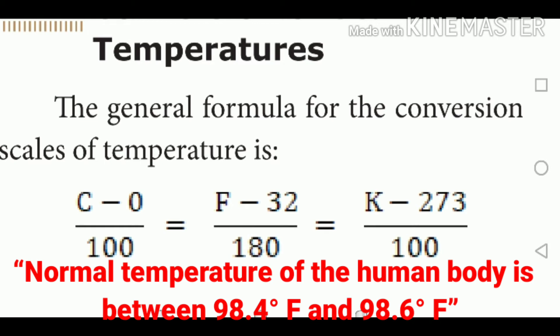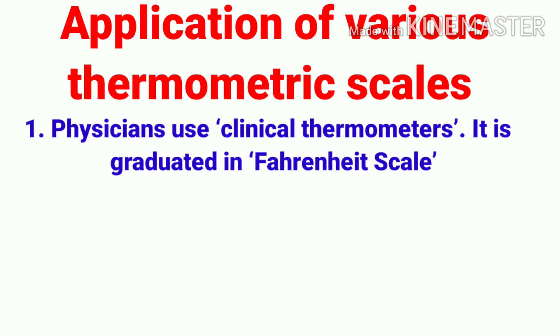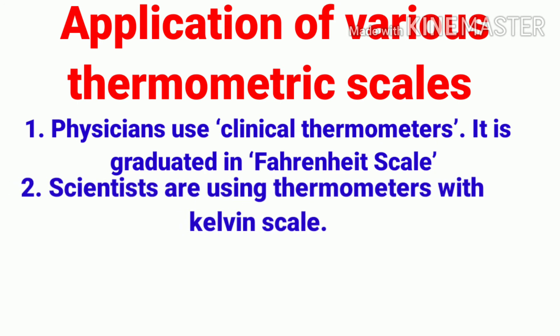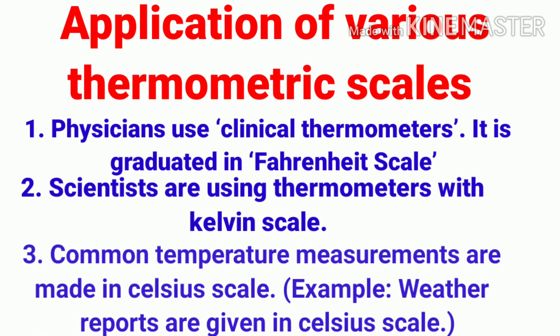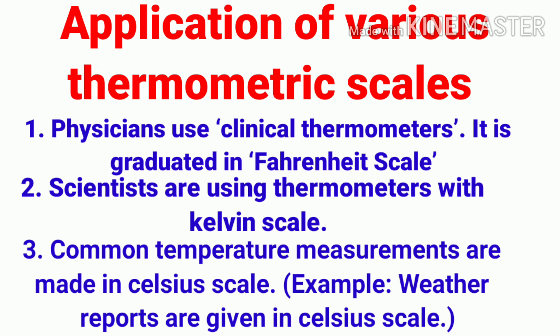The normal temperature of the human body is between 98.4°F and 98.6°F — this is a very important one-mark question. Regarding applications of thermometric scales: physicians use clinical thermometers graduated in the Fahrenheit scale; scientists use thermometers with the Kelvin scale; and common temperature measurements are made in the Celsius scale — for example, weather reports are given in Celsius.